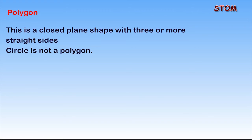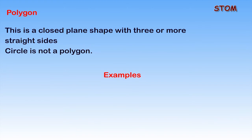Polygon. What is a polygon? A polygon is a closed shape with three or more straight sides. You should note that a circle is not a polygon. Now, let us look at some examples of a polygon.